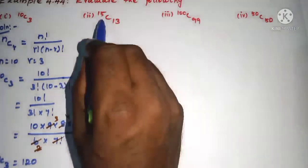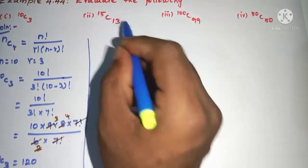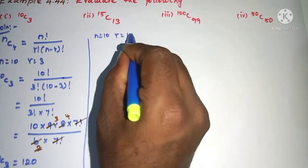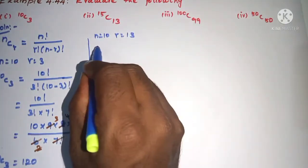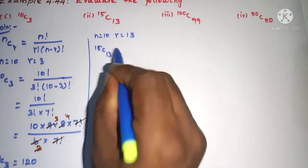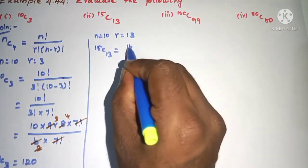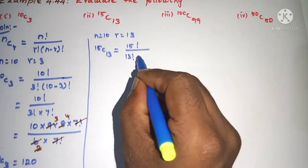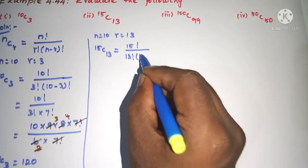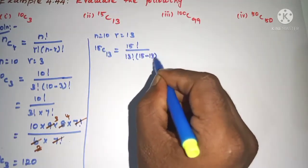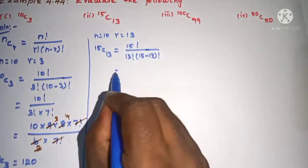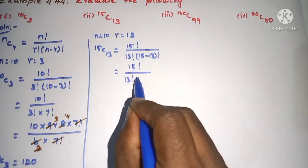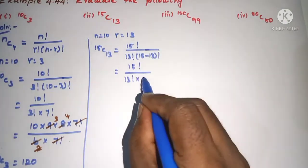Next, sub-question 2: 15C13. Using the same formula, n is equal to 15, r is equal to 13. Now 15C13 is equal to 15 factorial divided by 13 factorial into 15 minus 13 factorial. So, 15 factorial as it is divided by 13 factorial into 15 minus 13, we get 2 factorial.